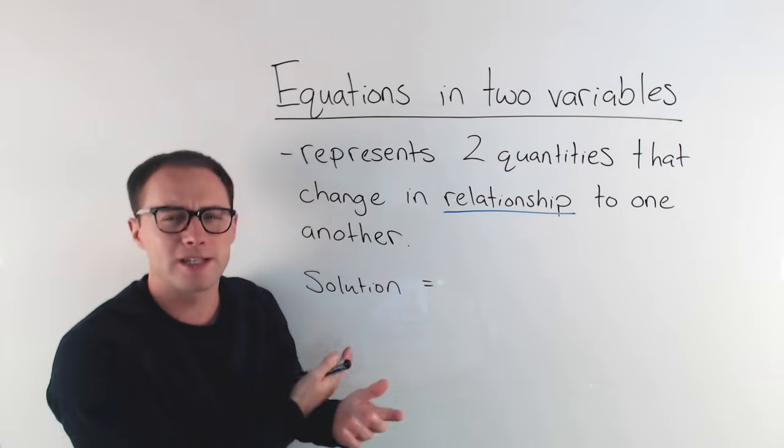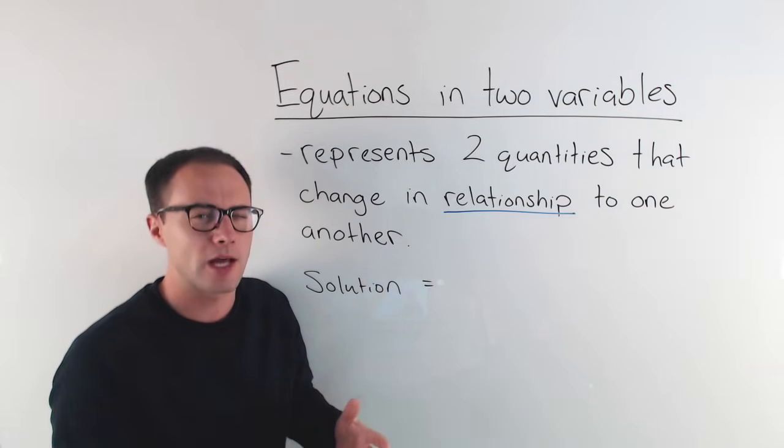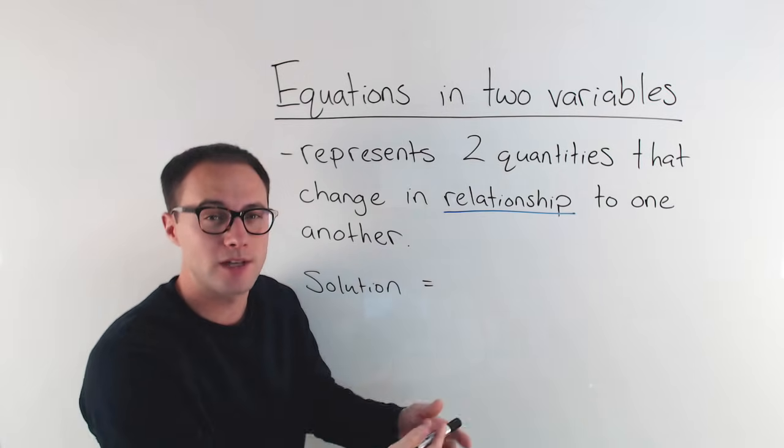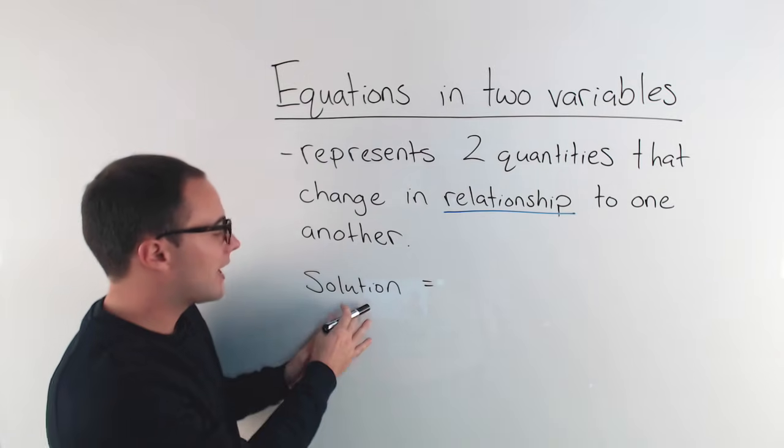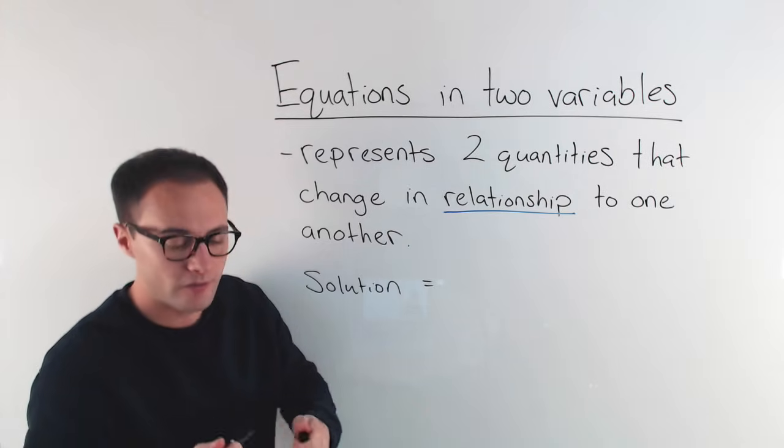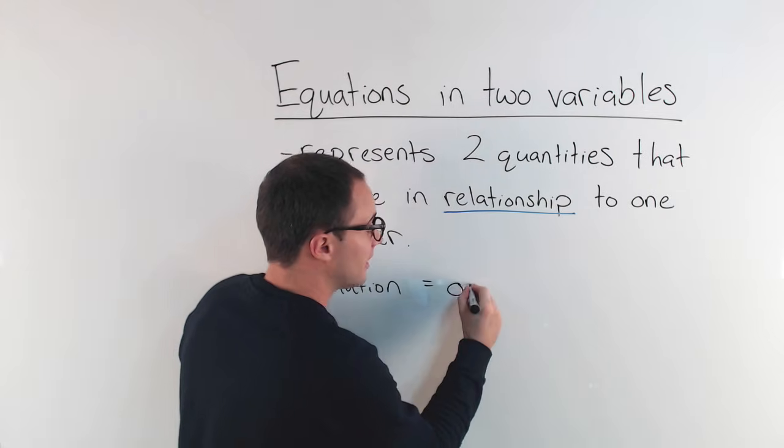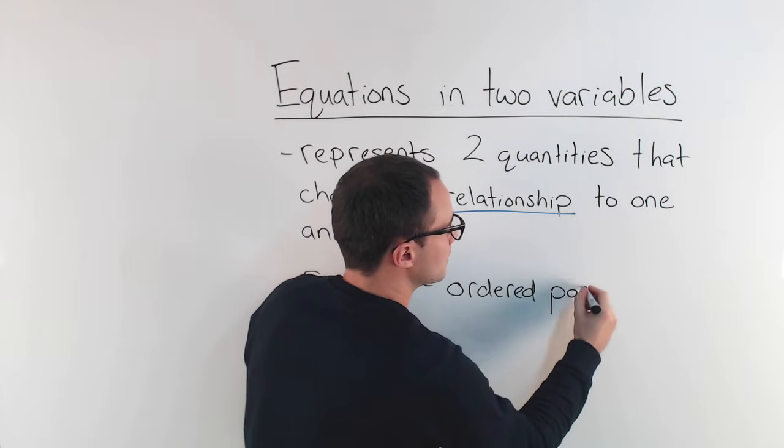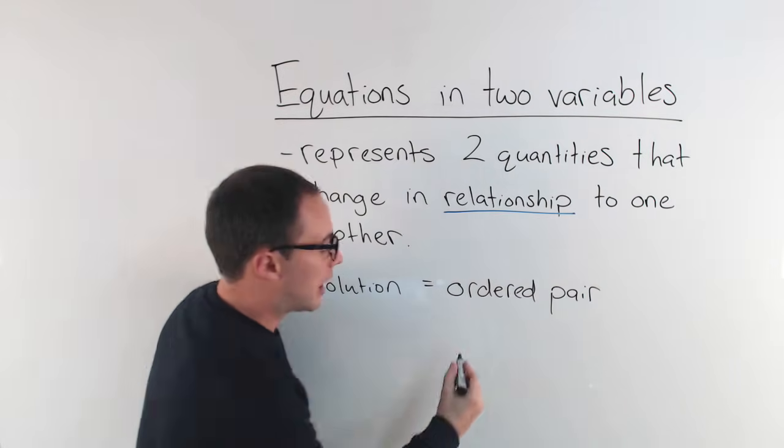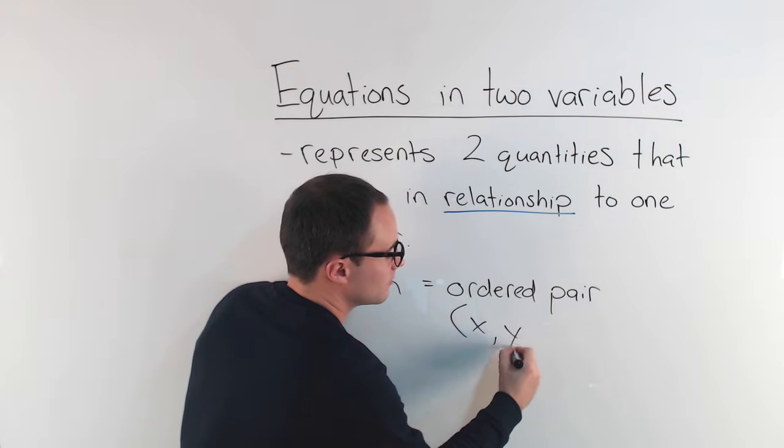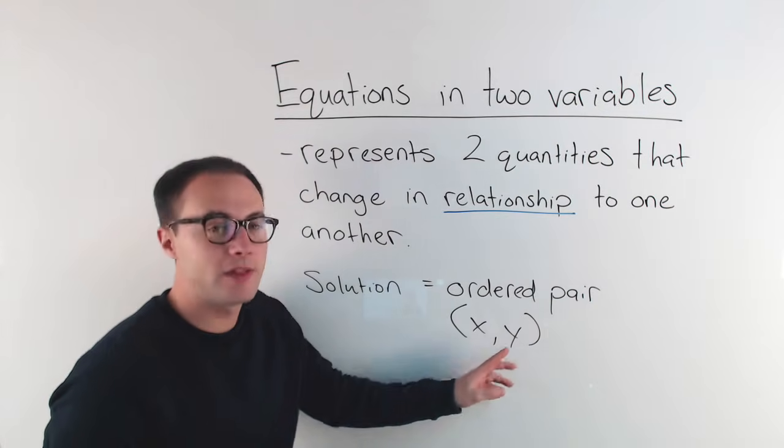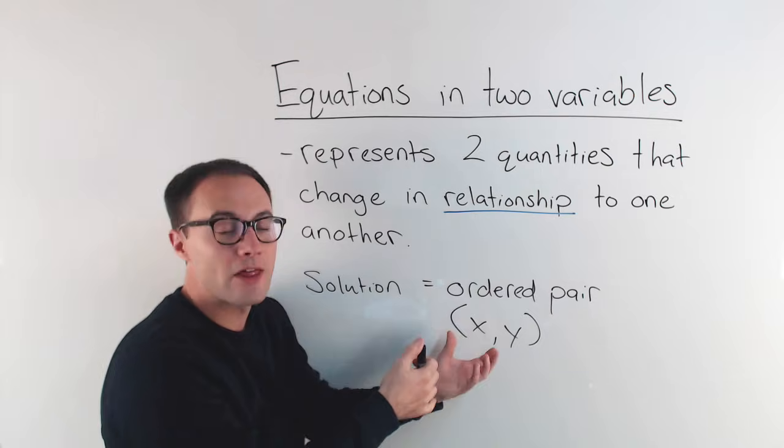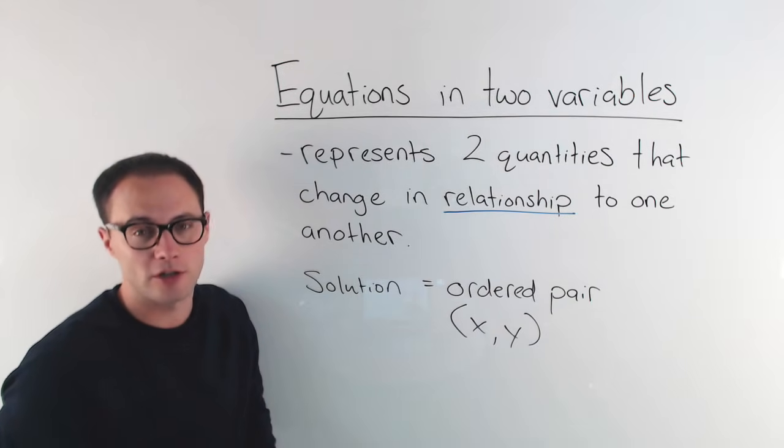So now, what exactly would a solution to an equation like that look like? Well, you've got two variables, so you're going to have two values in your solution. And that solution to an equation of two variables is an ordered pair, commonly like an x,y, where each one of these values would work together as a solution to your equation.